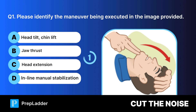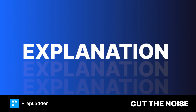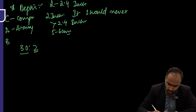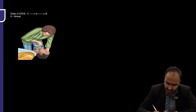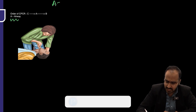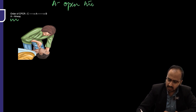The correct answer is head tilt chin lift. In a normal person you open the airway by head tilt and chin lift. After 30 compressions you go for airway opening by head tilt and chin lift.